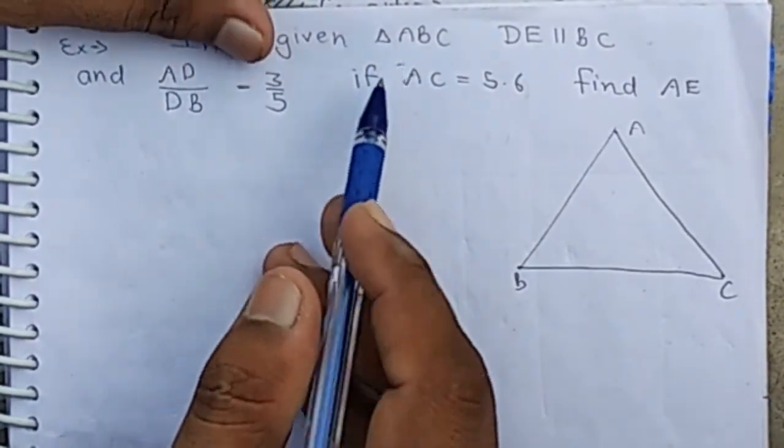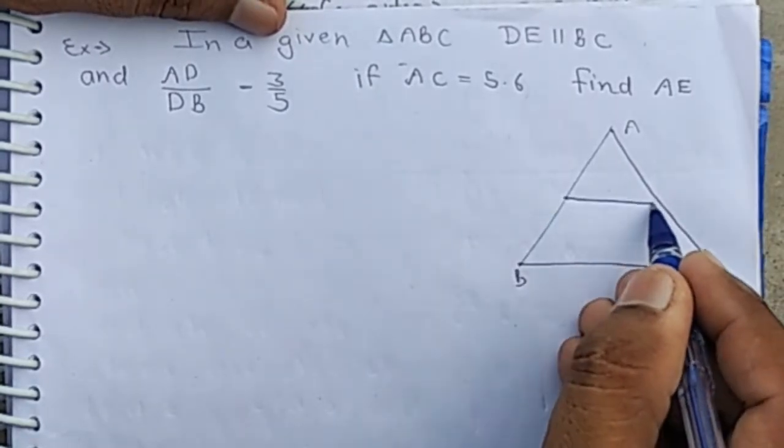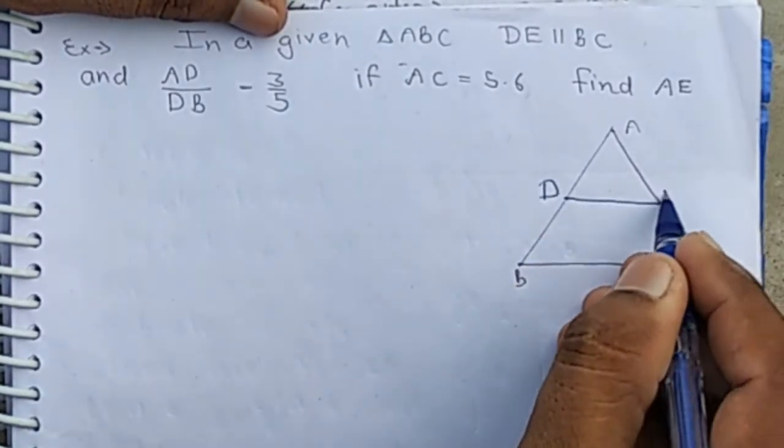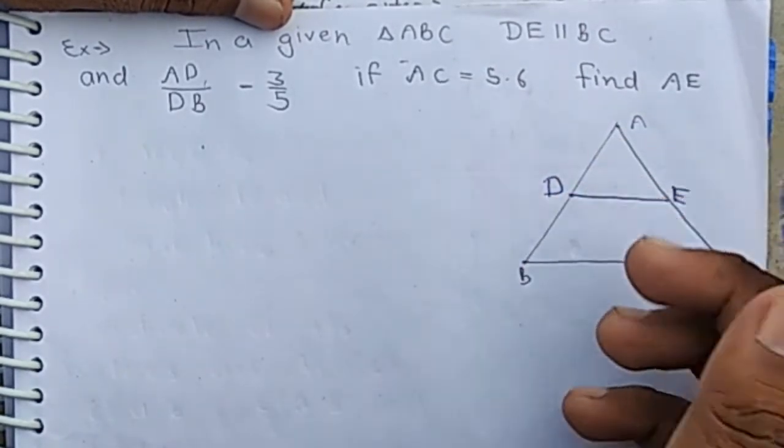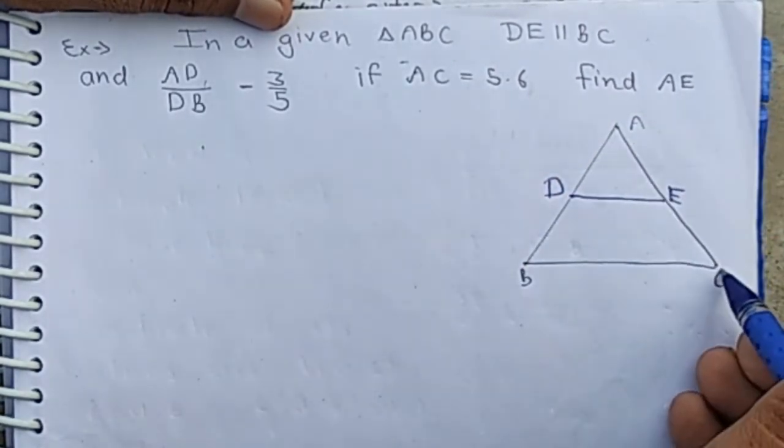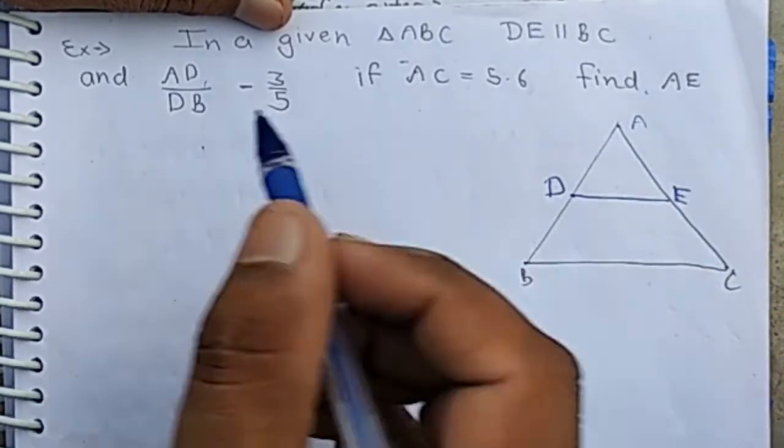In the given triangle ABC, DE is parallel to BC. AD by DB is given, the value of AC is given, and we need to find AE.